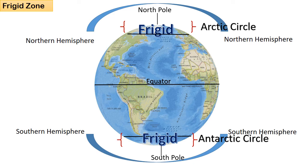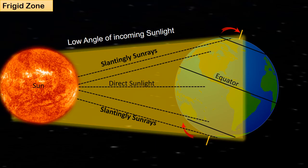The Sun's rays fall at a very small angle — nearly flat — throughout the year. The Sun's rays are always slanting, so there is less heat per surface area. This region receives slanting rays of the Sun as it lies farthest from the equator.